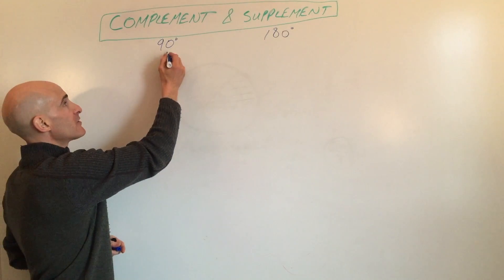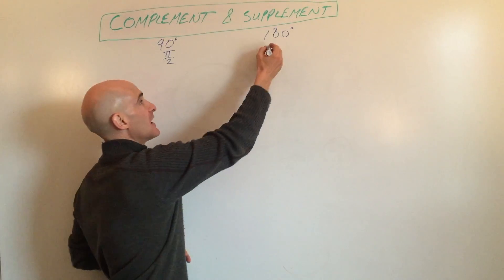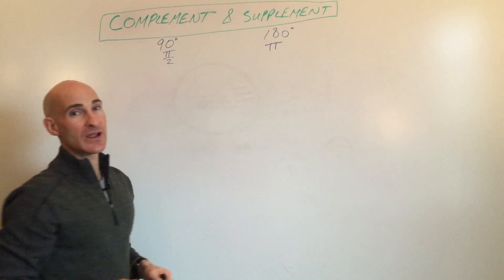So when we think of adding up to 90, we're thinking of adding up to π over 2. When we think of 180, we think about adding up to π radians.